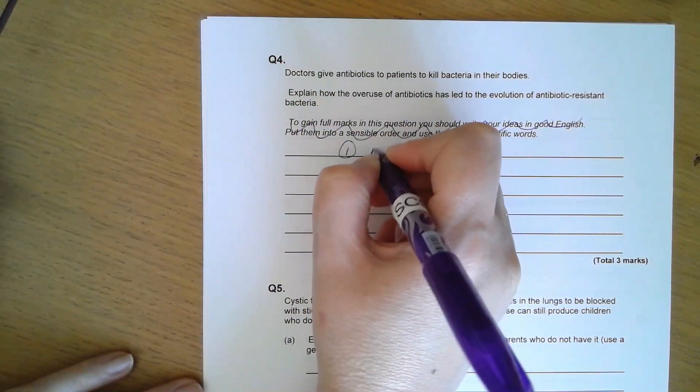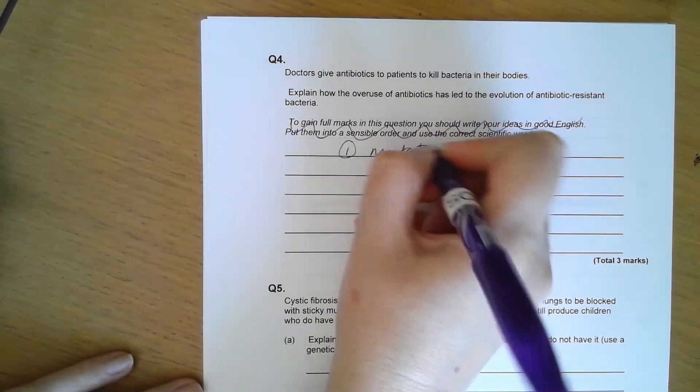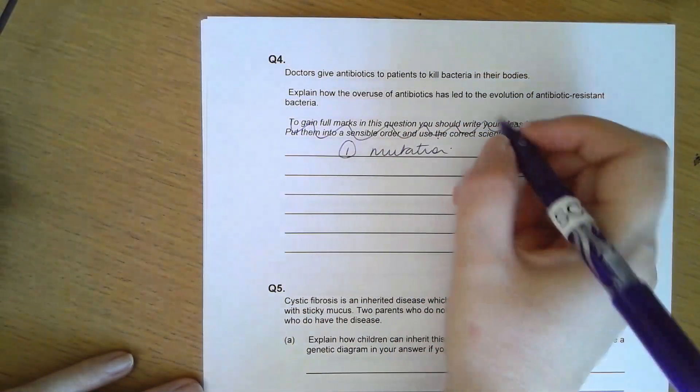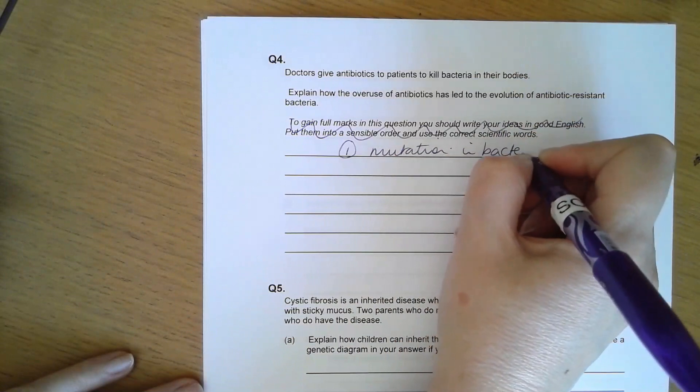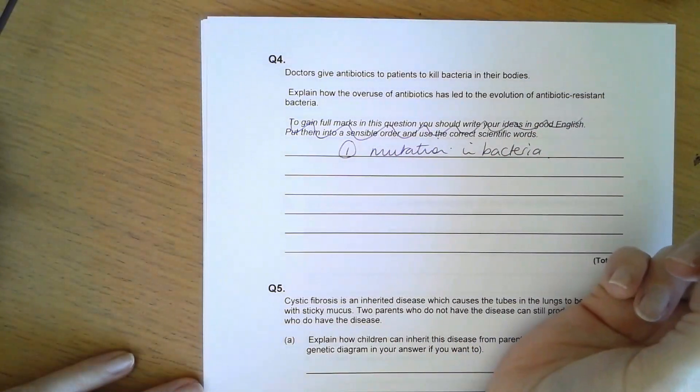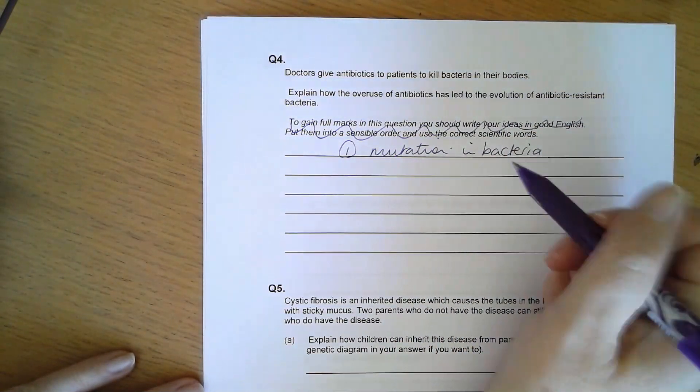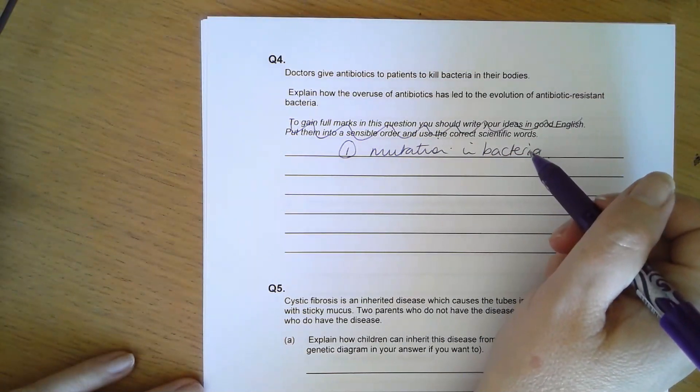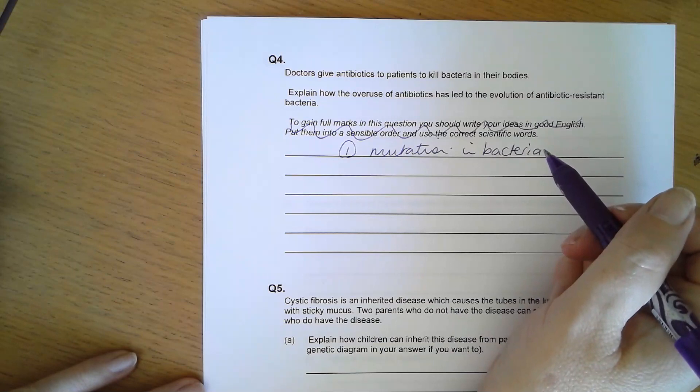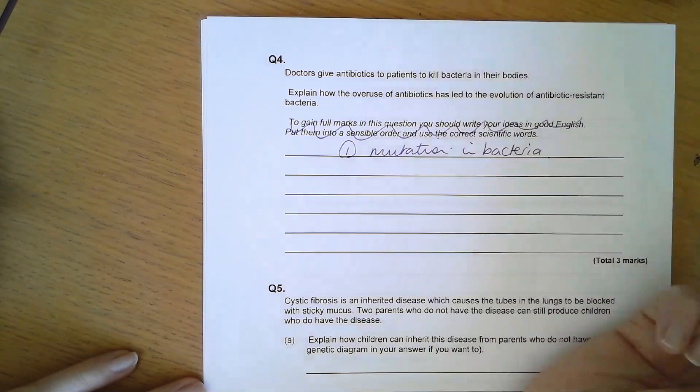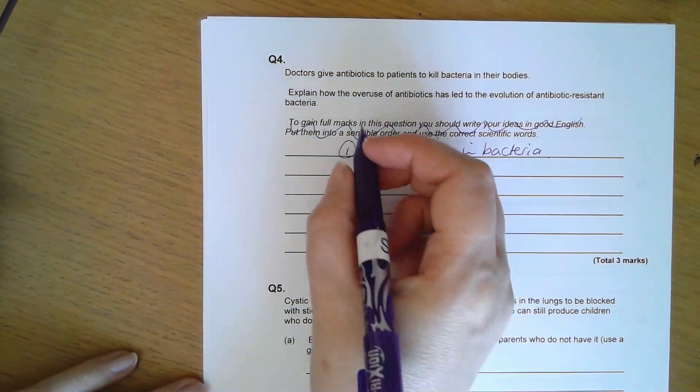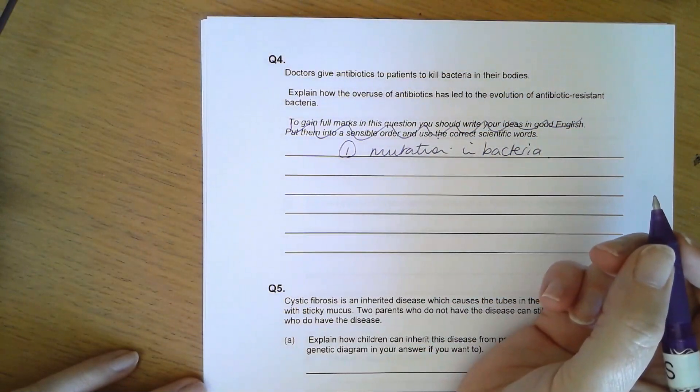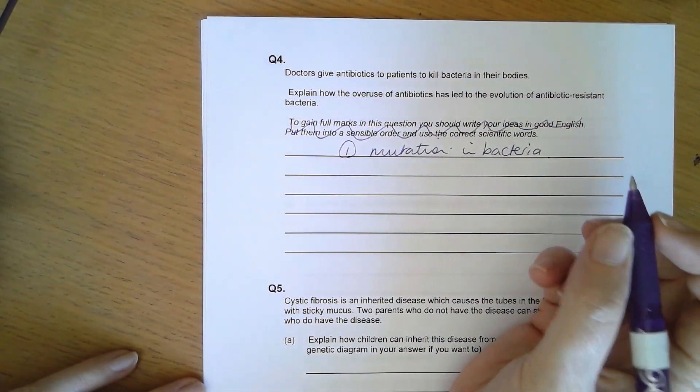The first thing that's going to happen is mutation in the bacteria which will cause the bacteria to be resistant to the antibiotic. It's really important that you don't say the antibiotic causes the mutation. The mutation just happens naturally, it's happening all the time. There is just a general mutation in the bacteria which causes it to be antibiotic resistant.